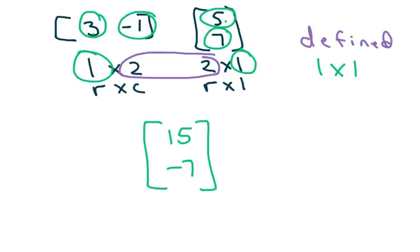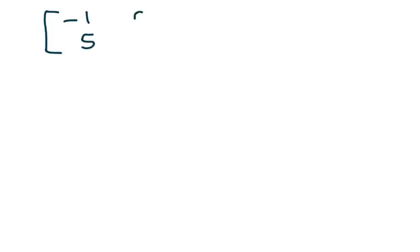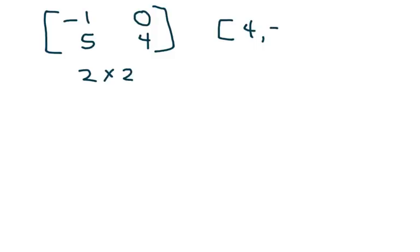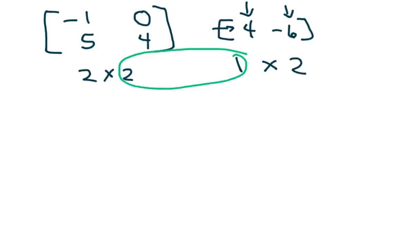Let's try another one. We have a 2×2 matrix [negative 1, 5; 0, 4] and a 1×2 matrix [4, negative 6] — one row and two columns. Since the inner dimensions are 2 and 1, which are not the same, this is not defined and we cannot multiply them.